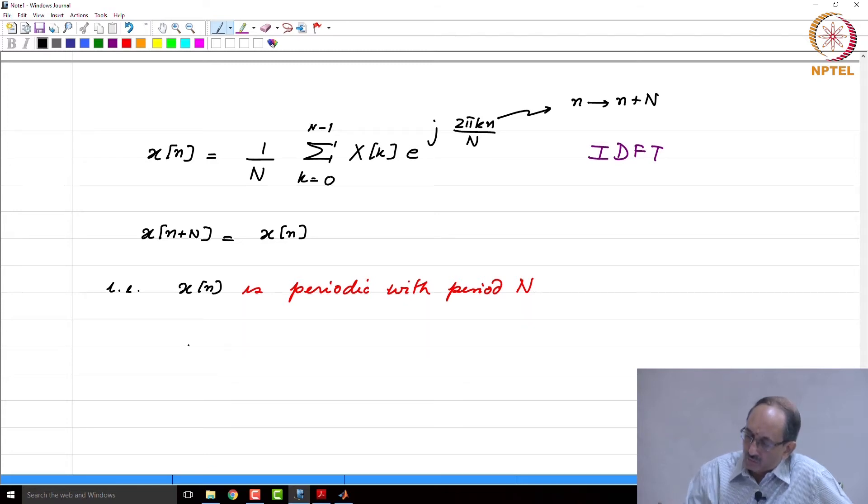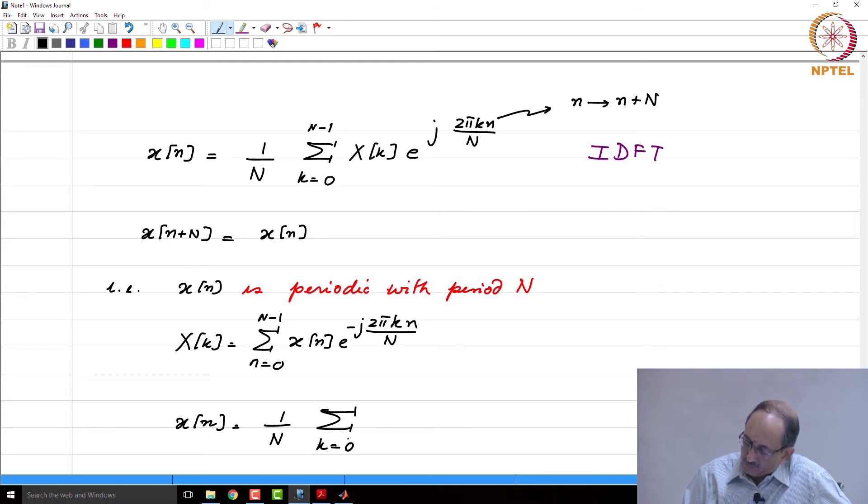Therefore, just to summarize, we have X(k) = sum from n=0 to N-1 of x(n) e to the minus j 2π kn by cap N. These are the DFT and the IDFT relationship. We have x(n) = (1/N) sum from k=0 to N-1 of X(k) e to the j 2π kn by cap N.